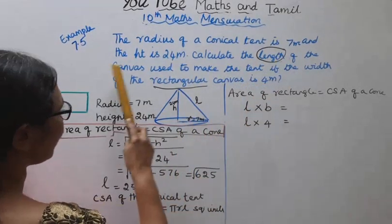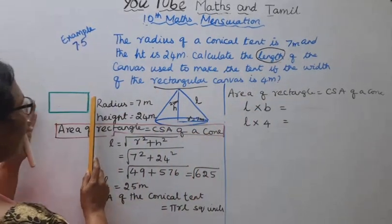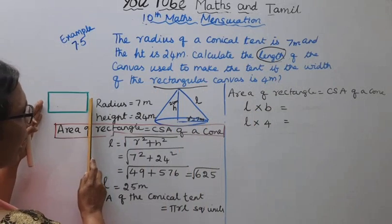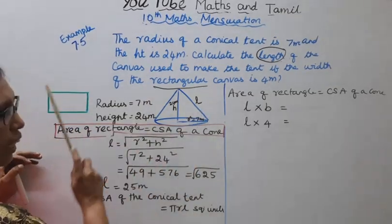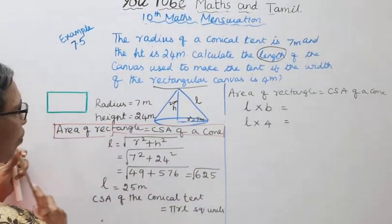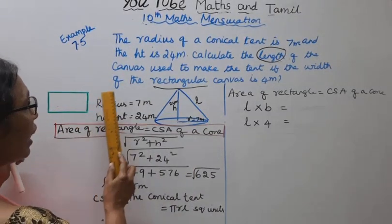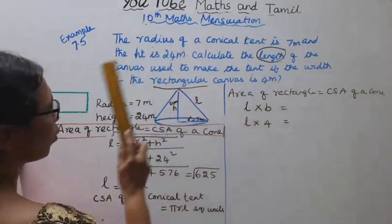Calculate the length of the canvas used to make the tent, which is rectangular. This is the length of the canvas.